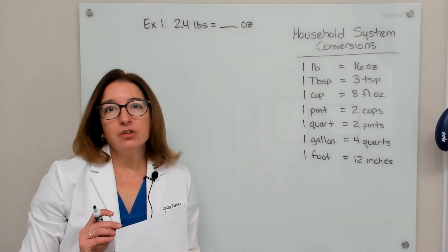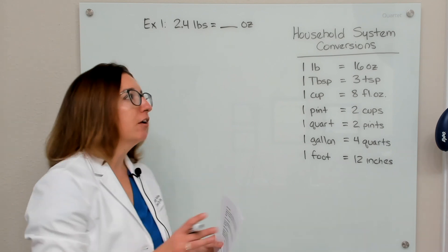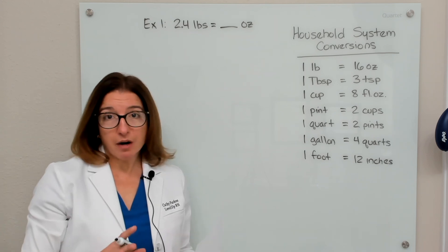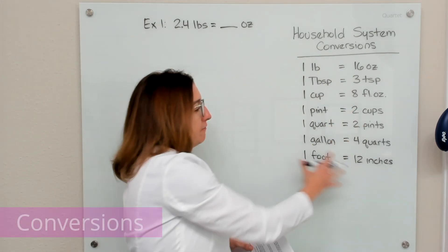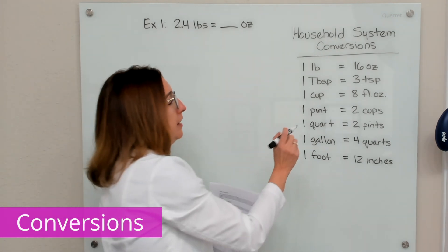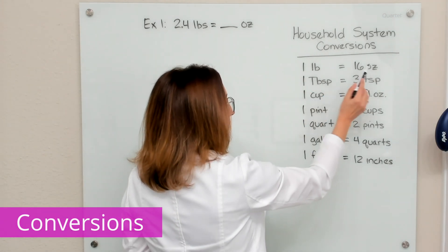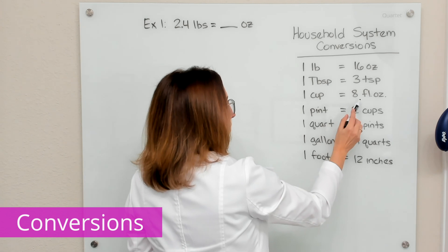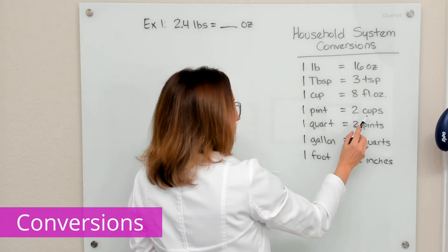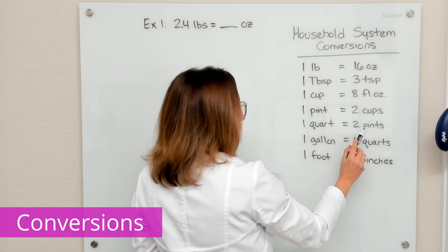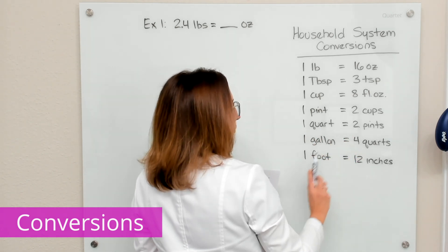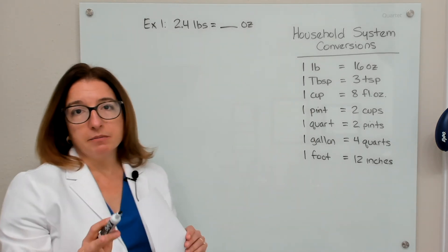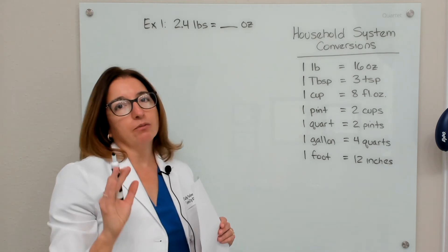All right, in this video I am going to work through a number of example problems that involve converting within the household system. And in order to be able to do these problems, you have to memorize these conversion factors over here on the side of my whiteboard. So definitely remember that one pound equals 16 ounces, one tablespoon equals three teaspoons, one cup equals eight fluid ounces, one pint equals two cups, one quart equals two pints, one gallon equals four quarts, and one foot equals 12 inches. So we are going to solve these example problems using dimensional analysis and ratio and proportion.